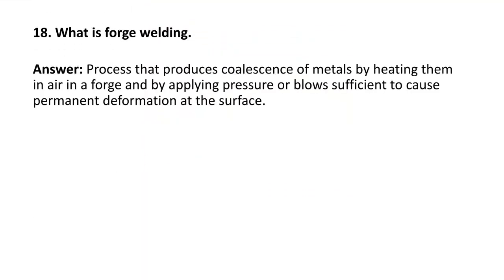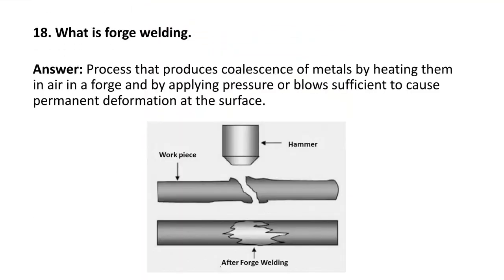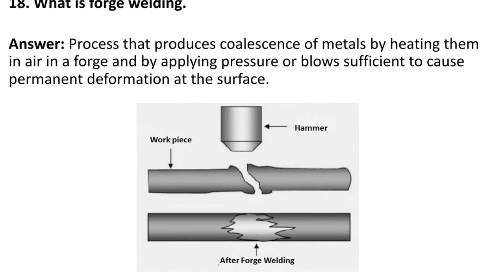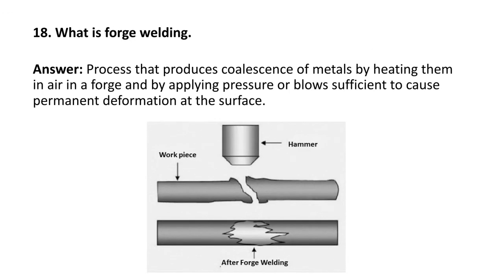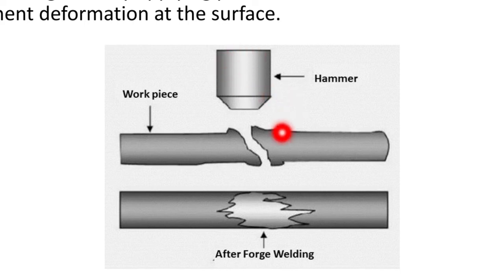Next question: what is forge welding? It is a process that produces coalescence of metals by heating them in air in a forge and by applying pressure or blows sufficient to cause permanent deformation at the interface. The metal is first heated in air or in a forge, and then a hammer is applied over it so that it gets joined together. This is known as forge welding.